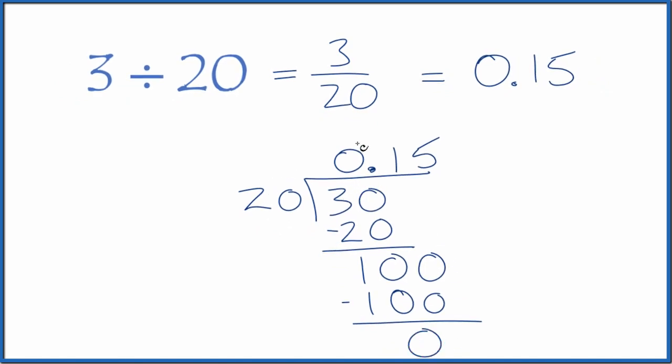So 3 divided by 20, the decimal is 0.15. That's what we found earlier. This is Dr. B. Dividing 3 by 20, you get the fraction 3/20 or the decimal 0.15. Thanks for watching.